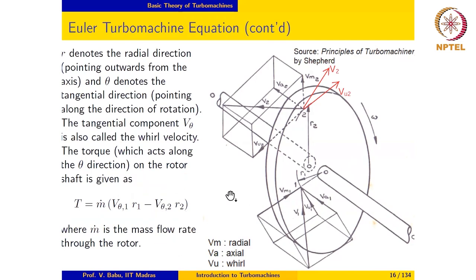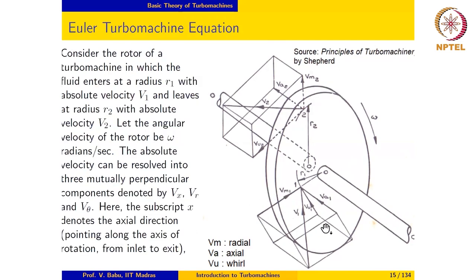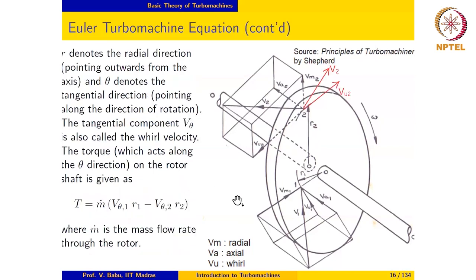If we look at the torque exerted on the fluid as a result of the passage of the fluid, it is nothing but the rate of change of angular momentum. M-dot is the mass flow rate through the rotor. The rate of change of angular momentum of the fluid — the negative of that — is the torque exerted on the rotor. The rate of change of angular momentum is Vθ2·R2 minus Vθ1·R1.